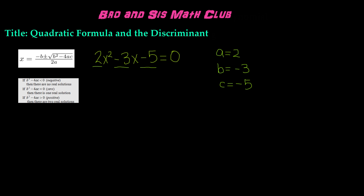Now that we have determined the a, b, and c values, let's plug them into b squared minus 4ac to determine the discriminant. We have b squared minus 4ac — plugging in the values, b is negative 3, so we have negative 3 squared, minus 4 times a, which is positive 2, times c, which is negative 5.